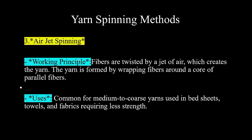The working principle of air jet spinning is that fibers are twisted by a jet of air which creates the yarn. The yarn is formed by wrapping fibers around a core of parallel fibers. This method is common for medium to coarser yarn and is used in bed sheets, towels, and fabrics requiring less strength.